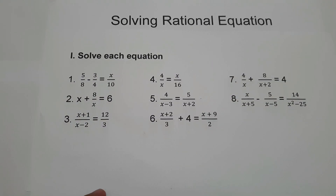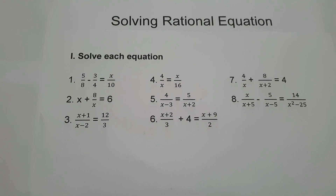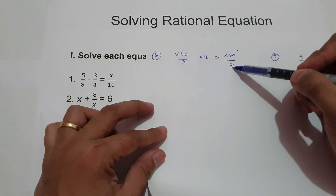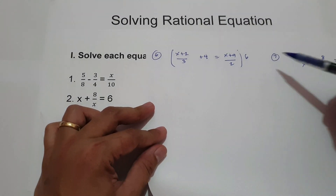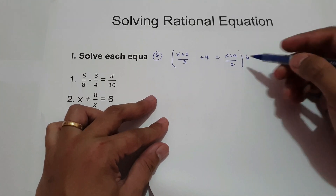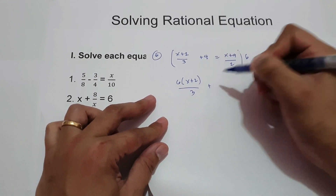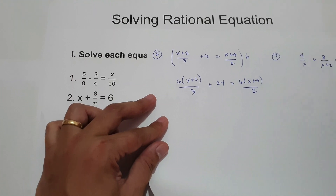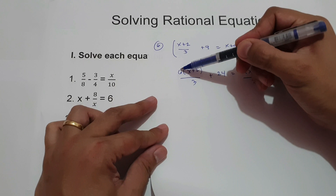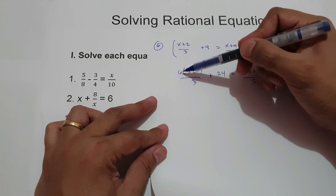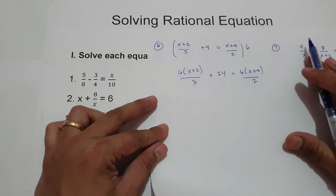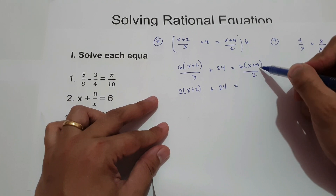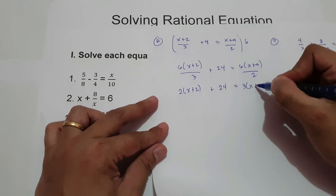On number 6, we have x plus 2 over 3 plus 4 equals x plus 9 over 2. The denominators are 3 and 2, so the least common multiple is 6. We multiply 6 on each term of the equation. So we have 6 multiplied by x plus 2 over 3, plus 4 times 6 is 24, equals 6 times x plus 9 over 2. Dividing 6 by 3 gives 2, so we have 2 times x plus 2 plus 24. For the right side, dividing 6 by 2 gives 3 times x plus 9.